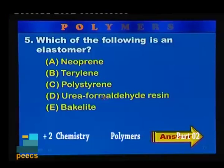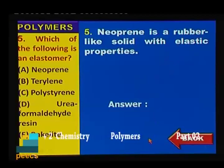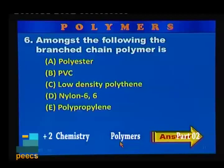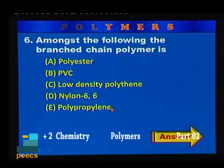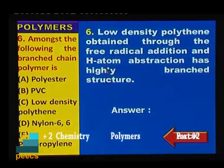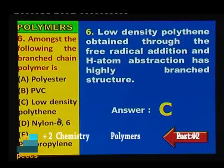Sample question 5: Which of the following is an elastomer? Options: neoprene, terrylene, polystyrene, urea formaldehyde resin, bakelite. Neoprene is a rubber-like solid with elastic properties, therefore the correct answer is option A — neoprene. Sample question 6: Among the following, the branched chain polymer is: polyester, PVC, low density polythene, nylon 6,6, polypropylene. Low density polyethylene, obtained through free radical addition and hydrogen abstraction, has a highly branched structure. Therefore the correct option is C — LDP is the only branched chain polymer; all others are linear polymers.